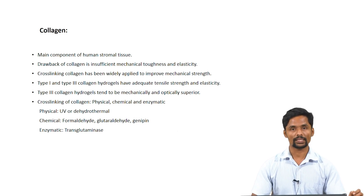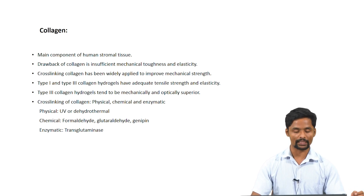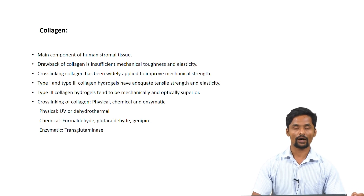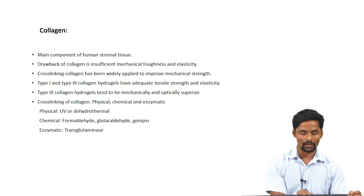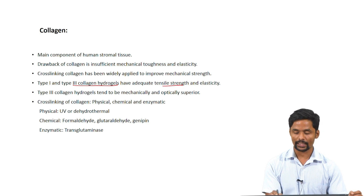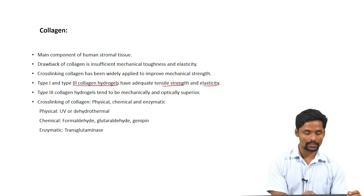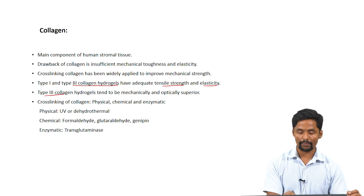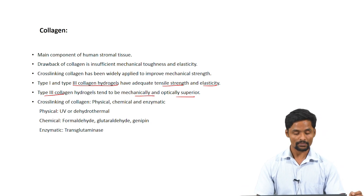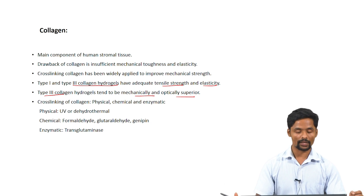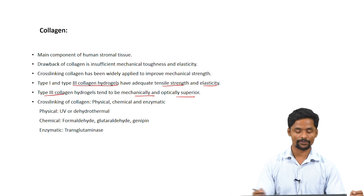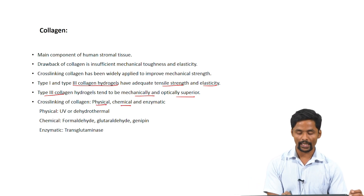To overcome the drawbacks of collagen, researchers have tried to cross-link collagen to improve mechanical strength. The type of collagen used plays its own role — for example, type 1 and type 3 collagen hydrogels have adequate tensile strength and elasticity, whereas type 3 collagen hydrogels tend to be mechanically and optically superior. Cross-linking of collagen is done using various methods classified under physical, chemical, and enzymatic methods.